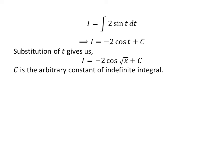Let us substitute t in terms of x. We had assumed t is equal to square root of x, so I is equal to minus 2 times cosine of square root of x plus capital C.